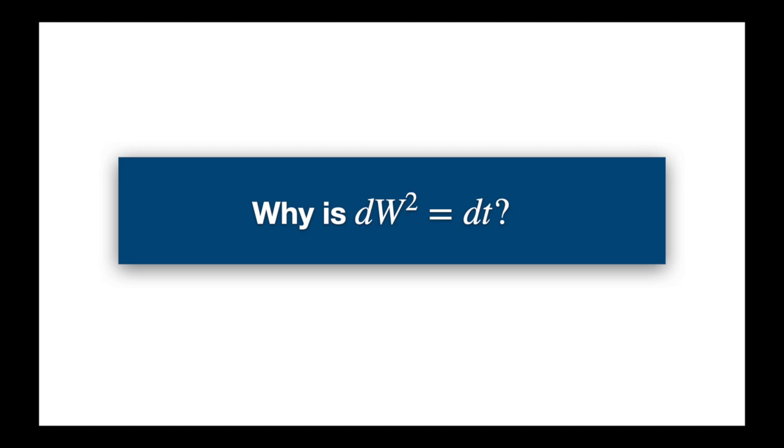Hi everyone. So let's continue our discussion of the Itô's box. It's all about mixing the two ingredients dt and dW. And it says that dt squared and the cross terms are 0, and dW squared is equal to dt.